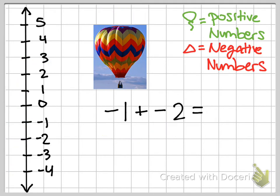Okay, here's our final example. We're starting at negative one. So we're pretty low here. And for some reason, we want to get even lower. Because it looks like we're adding negative two, which means we're adding two weights to the bottom of our balloon.